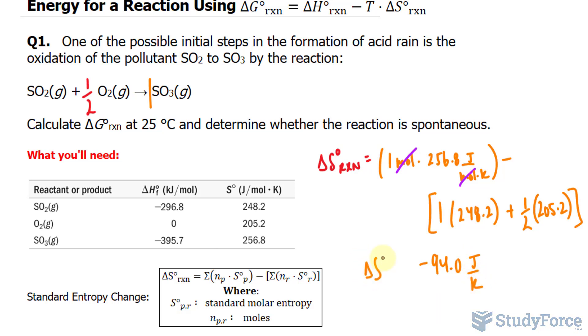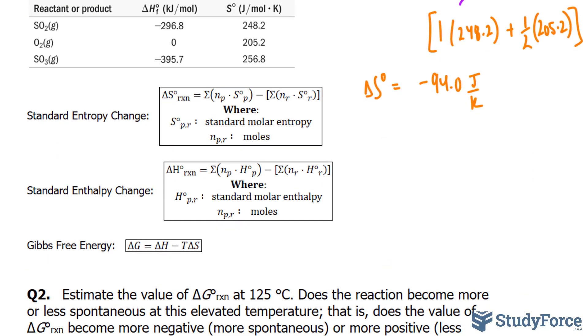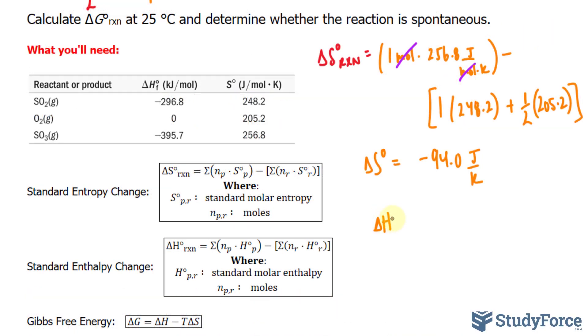We'll use that soon. We'll repeat this procedure, but for standard enthalpy change. So I'll write down delta H for the reaction is equal to 1 mole of negative 395.7 minus 1 mole of negative 296.8 plus 0 for oxygen.